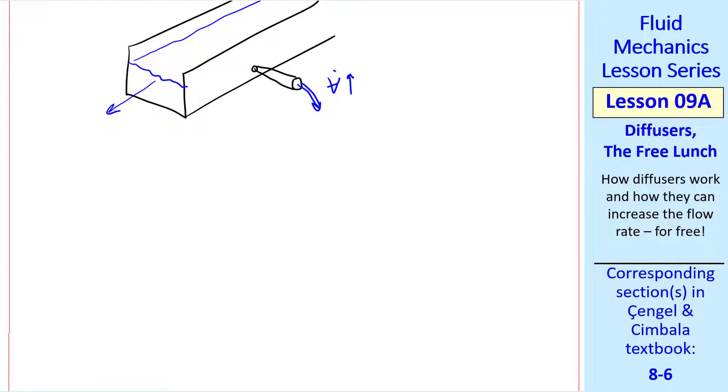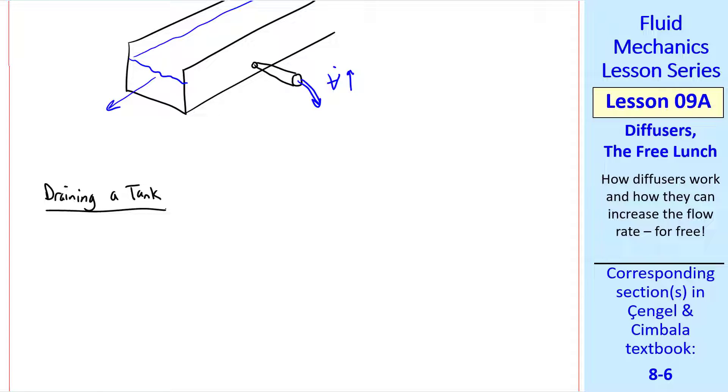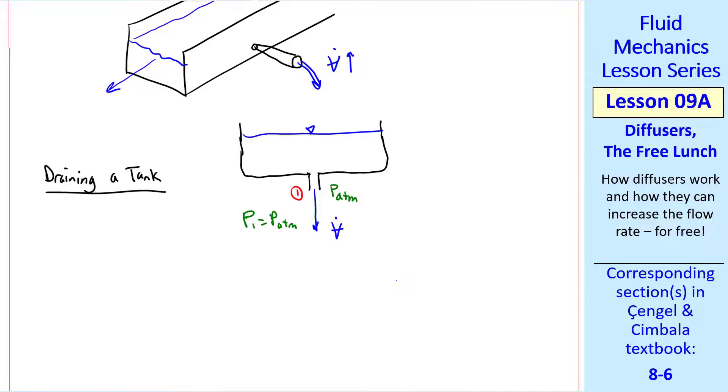There's another practical example that's similar, namely draining a tank. If we have some kind of a tank that has a liquid in it, and we put a small hole in a little section of pipe, let's call this 1. The liquid will come out, and since it's exposed to atmospheric pressure, P1 equal P atmosphere. And there's a certain volume flow rate that we get.